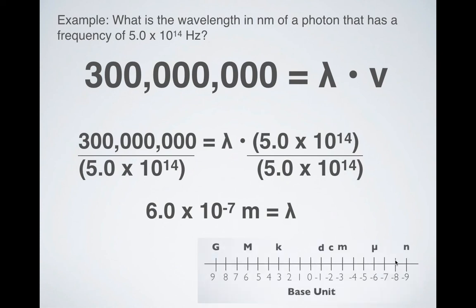If you wanted to convert that to nanometers, you could. You just have to hop that over 9 spaces. And so that would be about 600 nanometers, which makes it a red wavelength of light. It would look red to us. So again, if you have any questions, let me know. But that was it for this lesson.